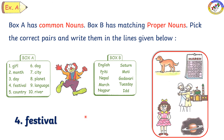We have to find the common noun festival and find the proper noun for festival in the box. English, Priti, Nepal, March, Nagpur, Saturn, Moti, Godavari, Tuesday, and Eid. Eid is the festival of Muslims. In the picture you can see here. So the proper noun for festival is Eid.